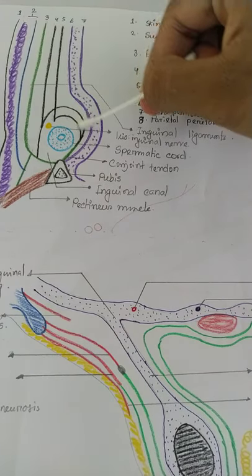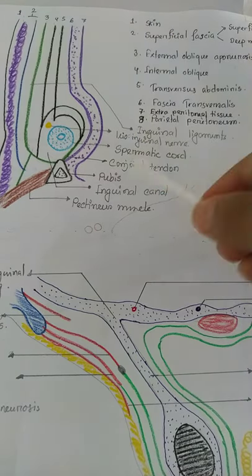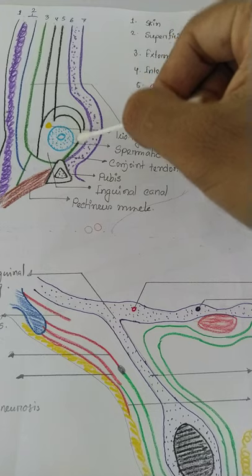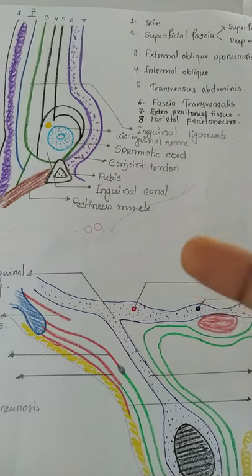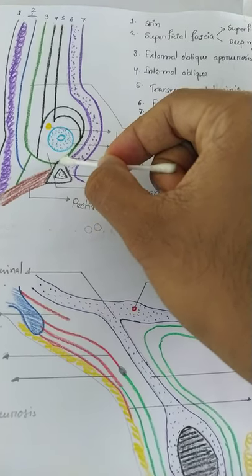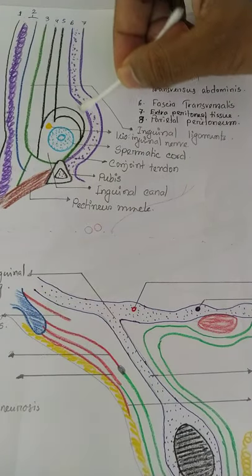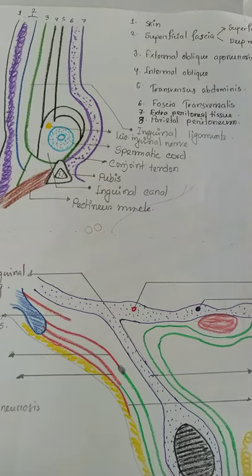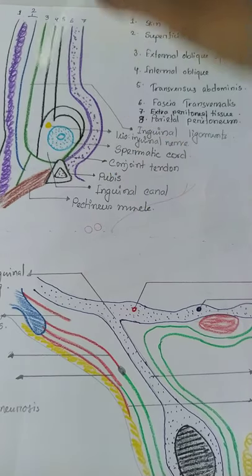The content of the spermatic cord passes through the canal. Laterally, the internal oblique and transversus abdominis form the walls, while medially these two muscles reunite to form the conjoint tendon — a strong tendon-like structure attached to the pubic symphysis and pubic crest. Posteriorly there is the fascia transversalis, then extraperitoneal tissue (a fatty layer), and finally the parietal peritoneum.